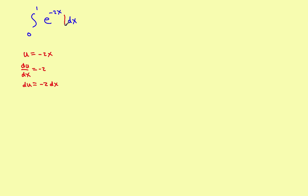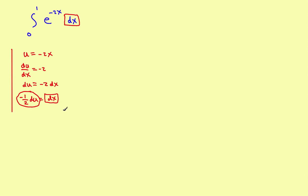In the u substitution we want to remove the dx and turn it into a du. We don't need the negative 2, so move it to the other side: minus one-half du equals dx. So dx matches up and the substitution is minus one-half du. We'll isolate that u substitution in its own box.